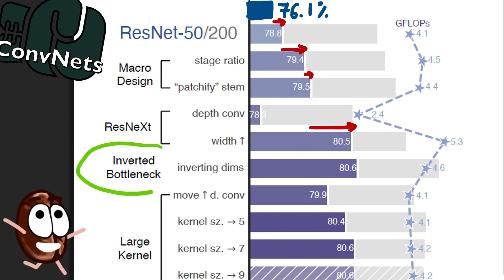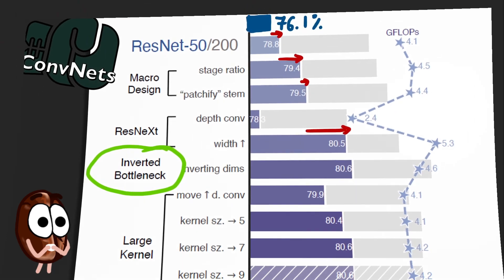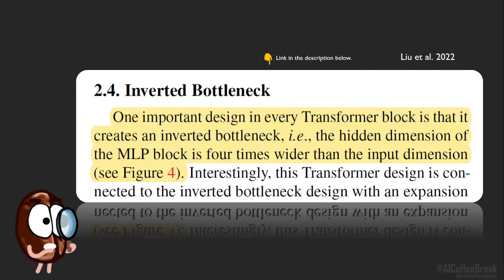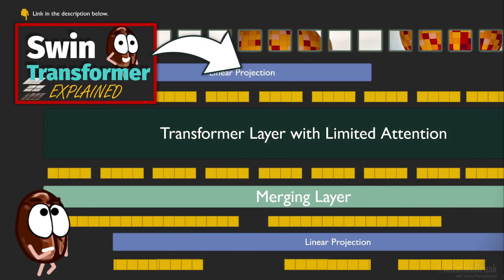We find it a little bit misleading here that the authors say that one important design in every transformer block is that it creates an inverted bottleneck, that is, the hidden dimension of the MLP block is four times wider than the input dimension. Hopefully, we don't get something wrong here, but this is the case for every SWIN transformer in particular, not every transformer in general. Because yes, in SWIN transformers that work hierarchically, the outputs of four blocks get concatenated, such that in the end, the hidden dimension increases four times, but in any case,